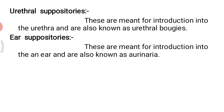Fifth type is ear cones, also known as ear cones or auricones. These are meant for introduction into the ear and are nowadays rarely used. These suppositories are thin, long, and cylindrical in shape and weigh about one gram. Ear cones are also usually prepared with theobroma oil.